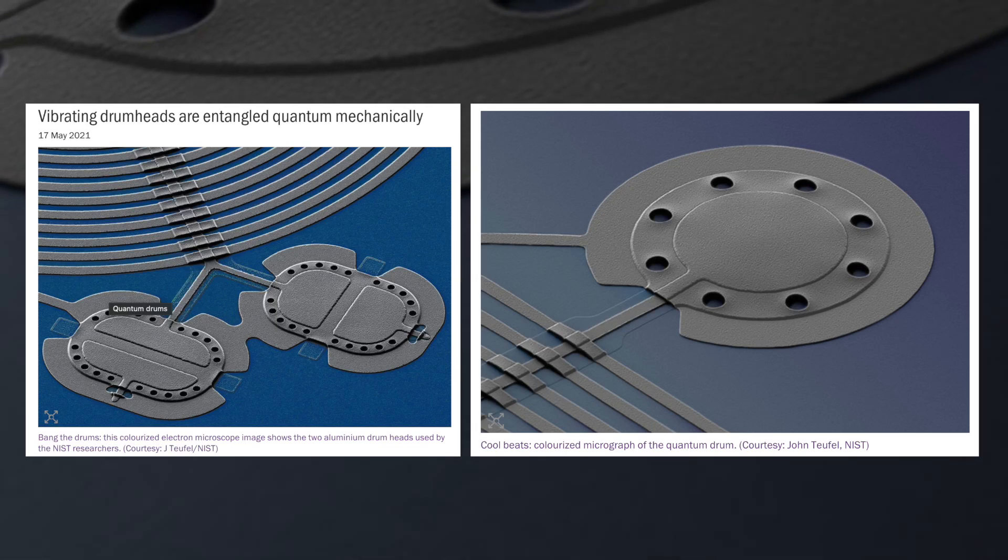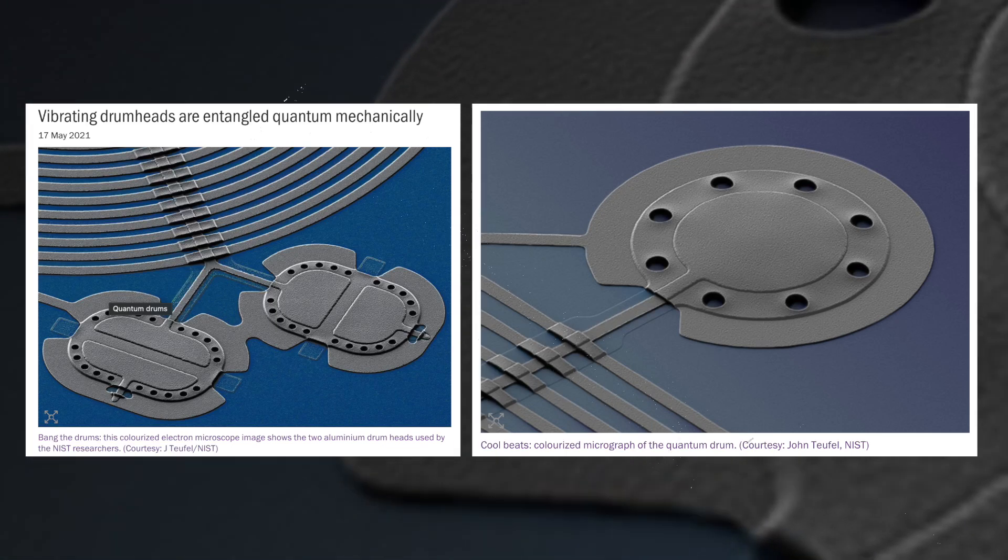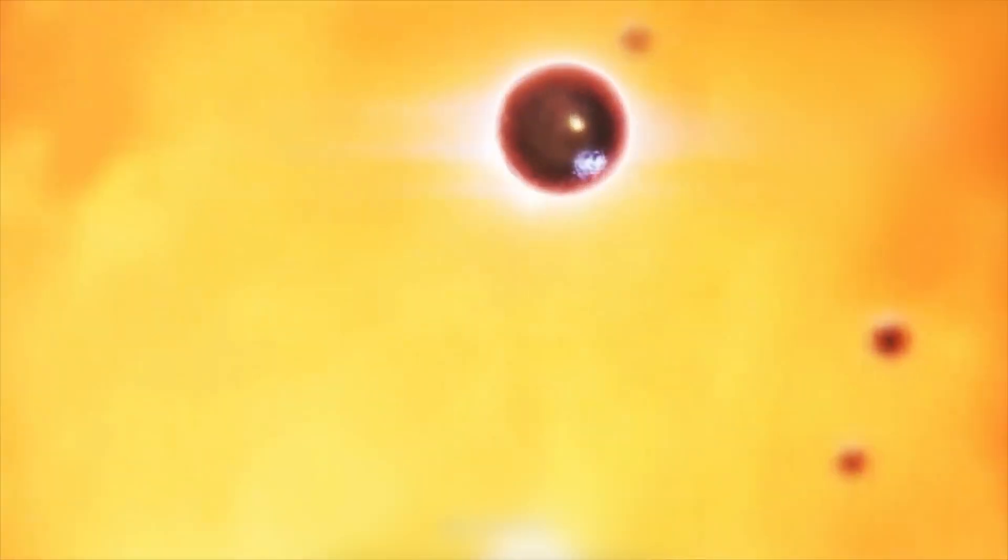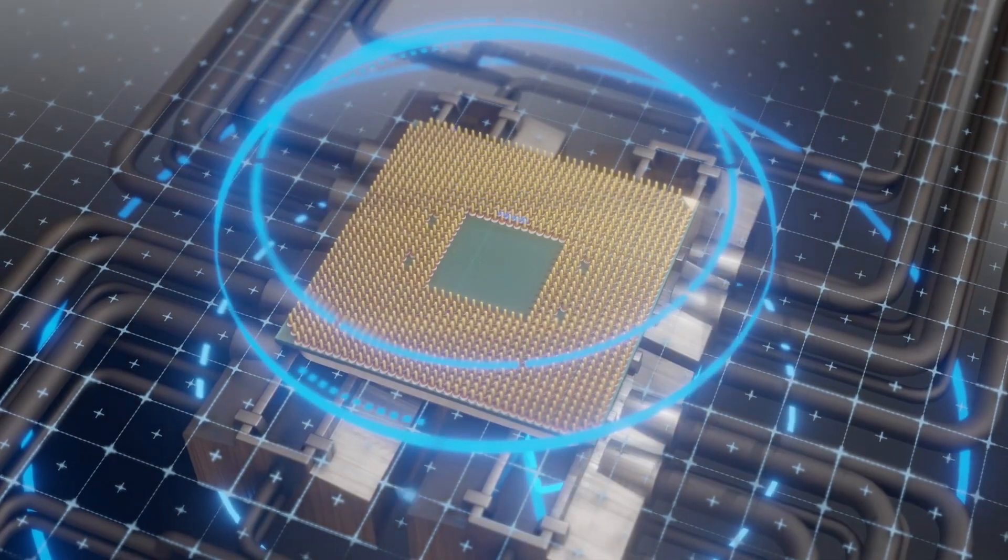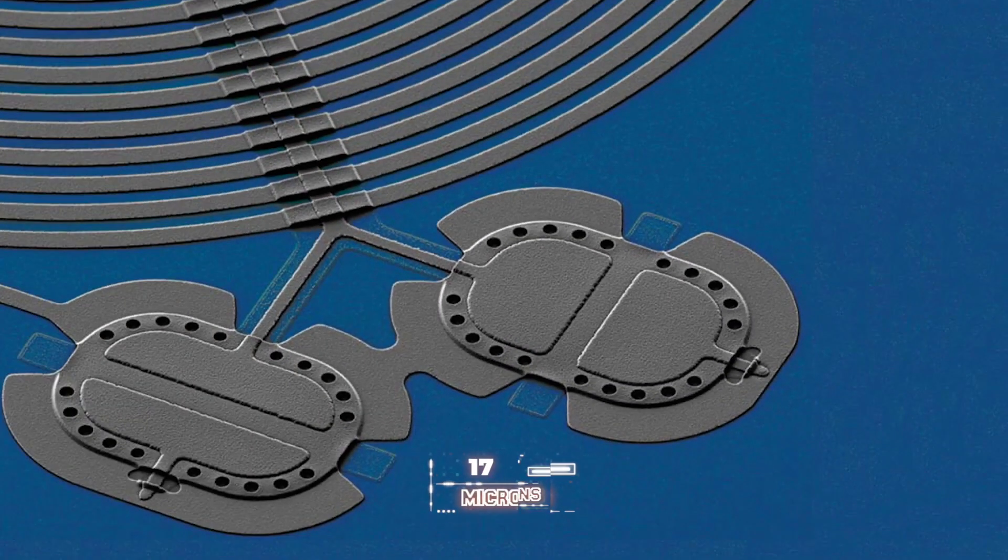Another team of physicists in Finland are taking a slightly different approach to find out whether or not macroscopic objects can become entangled. Instead of putting a pair of entangled beams on a chip, they developed tiny aluminum drum heads that are the same width as a human hair, about 17 microns.